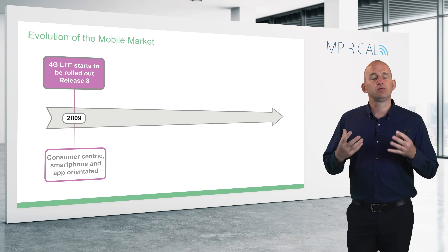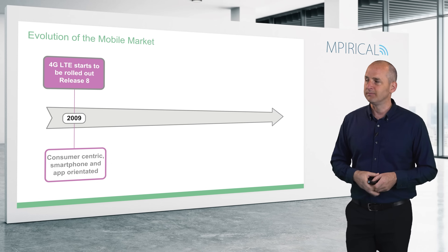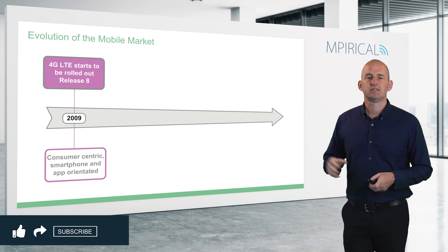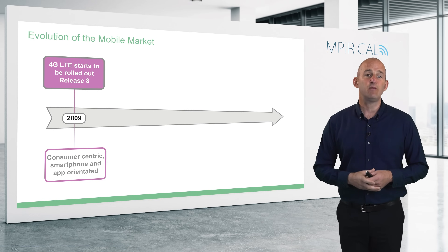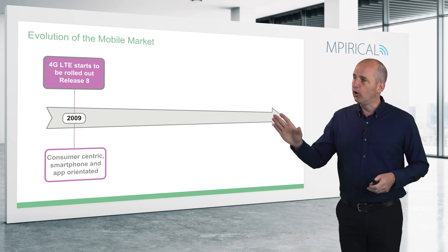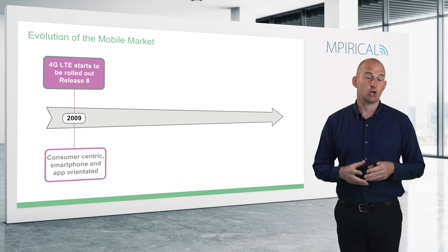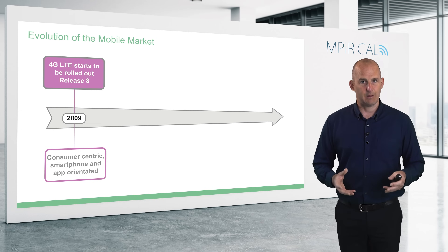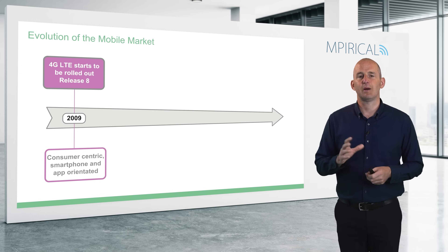When 4G was released — remember it was release 8 of the 3GPP specifications — when it was actually launched in about 2009, it was very much a consumer-centric technology. It was all about the latest generations of smartphones and everything was very much app-oriented. Over the years since 2009, there's been a lot of organizations which have made a great deal of money from apps. The problem is for the mobile service provider, they've not necessarily been as exposed to that particular revenue stream. We need to really be moving away from a purely consumer-centric market.